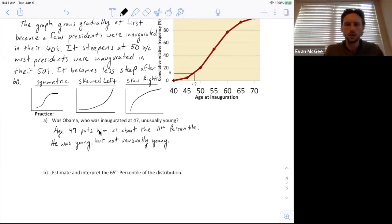So for this problem, we used his age, 47, to find his percentile, 11th. This way we're going to go backwards. They want us to estimate and interpret what is the 65th percentile. So now we're going to start on the percentile, the cumulative frequency side, go up to 65 and follow it over to try and match which age is the 65th percentile. And so I'll draw that out.